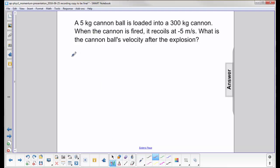A five kilogram cannonball, which we'll call mass A, is loaded into a 300 kilogram cannon. We'll assume that the initial velocity of the cannonball is zero because it's just sitting inside the cannon.